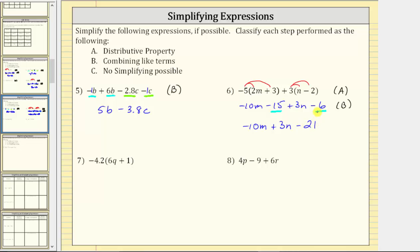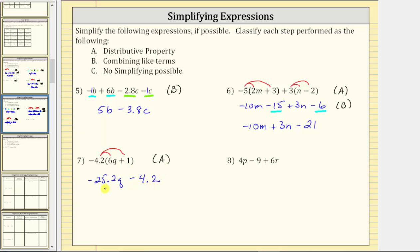Number seven, the first step is to distribute negative four point two. Negative four point two times six q is equal to negative twenty-five point two q. Negative four point two times one is negative four point two, written as minus four point two. These two terms are not like terms, so the expression is now simplified.